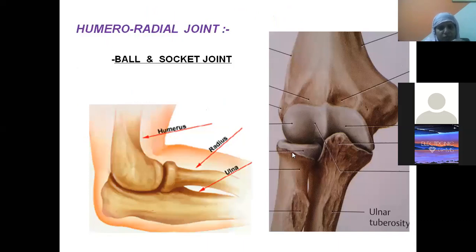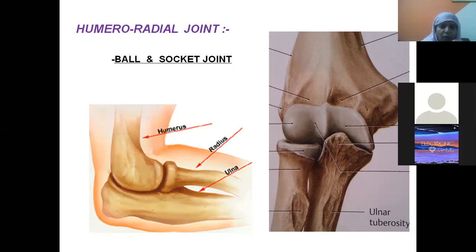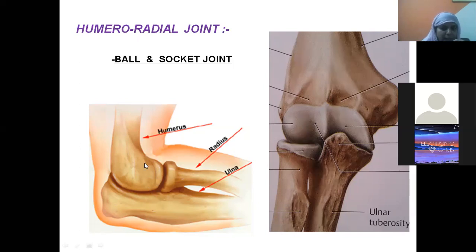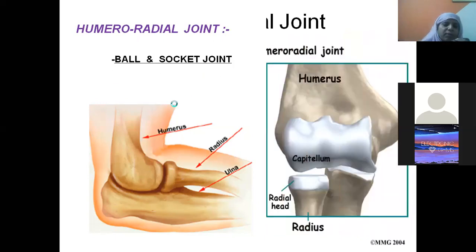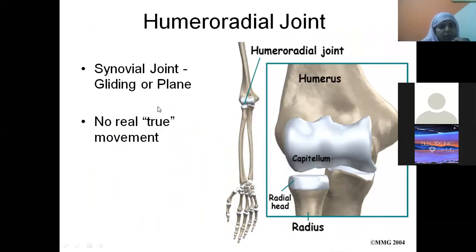The humero-ulnar joint is a hinge joint, whereas the humero-radial joint resembles a ball-and-socket joint. The capitulum acts as the ball and the concavity of the head of the radius acts as the socket — the reverse of the shoulder joint. It is a synovial joint and can also be called a gliding or plane joint. True independent movement here is limited.